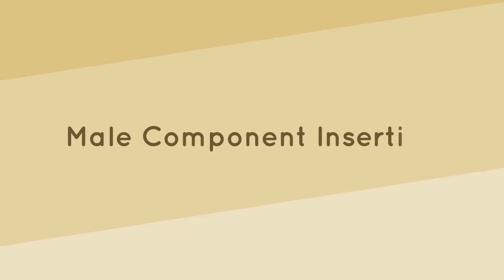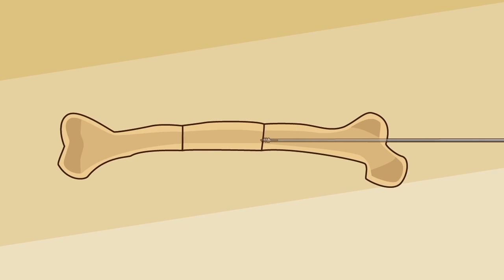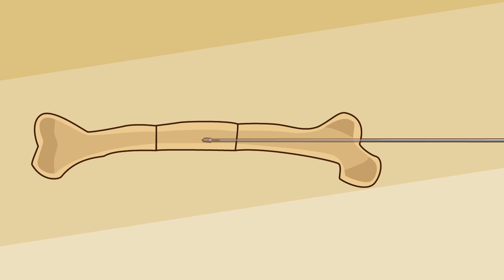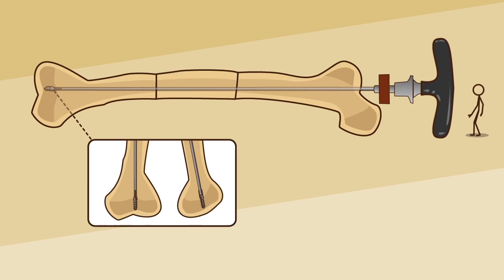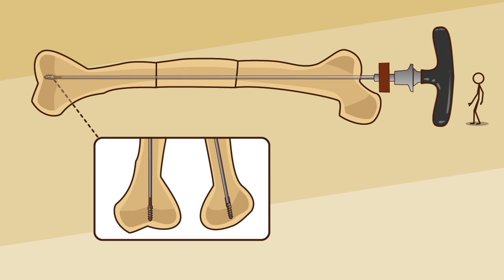Male component insertion. The male solid nail is pushed distally after reduction of the osteotomy and screwed into the distal epiphysis. Verify under fluoroscope that the distal thread is positioned beyond the growth plate. Otherwise, normal growth may be affected.